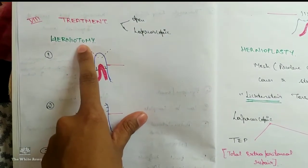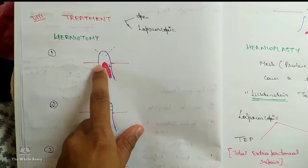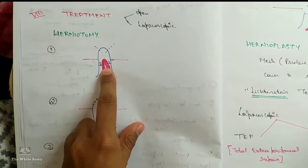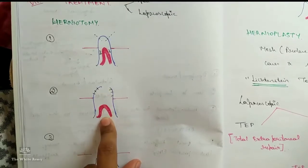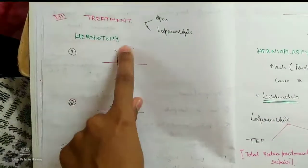In open, herniotomy which is not practiced now. In herniotomy, this is the defect and this is the sac. This is the content. In second step we have opened the sac, pushed the content downward, and left it open. Defect is left open. This is herniotomy.